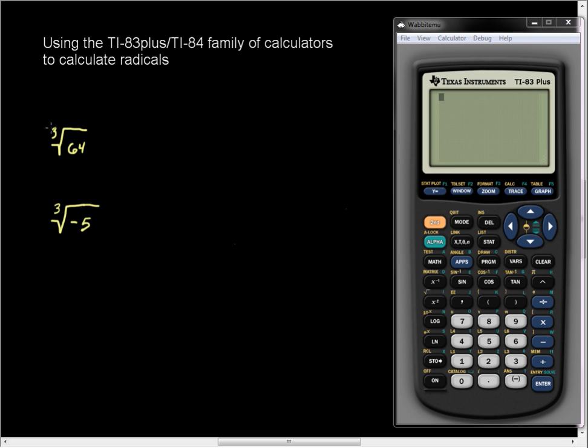To access the cube root function, we need to go into the math menu. So we're going to press the math button, and you'll see option 4 contains the cube root of. We can either press 4 or we can scroll down and press enter. That's going to activate the cube root, and you'll see the little 3 out in front.